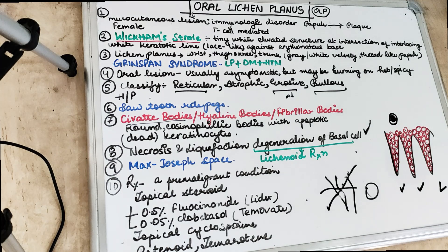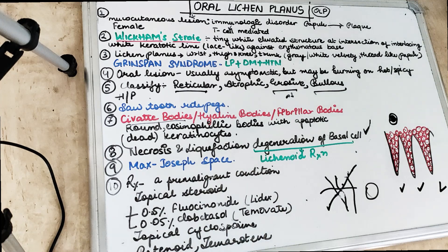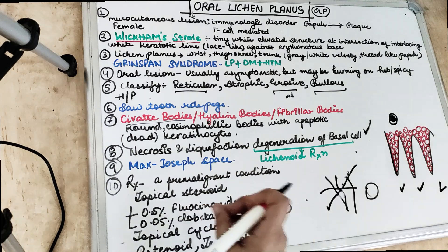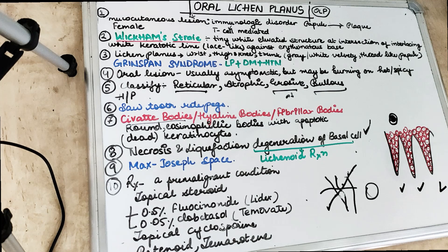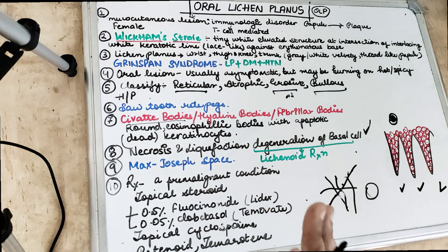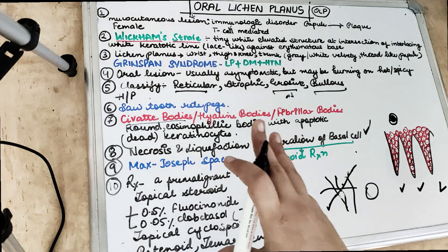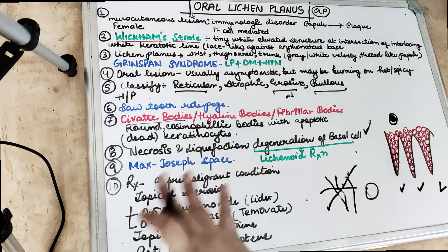As a pre-malignant condition, there is no exact cure for oral lichen planus, so we manage symptoms. Topically, high-potency corticosteroids are given, such as fluocinonide (Lidex) and 0.05% clobetasol (Temovate). Retinoids like tazarotene and topical cyclosporine may also be given. Surgical excision is not indicated except when there is concomitant dysplasia — only in that case is surgical excision performed.